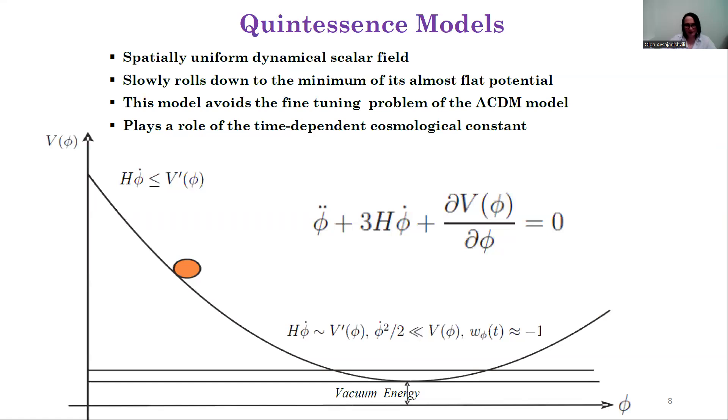Quintessence is a special uniform dynamical scalar field, slowly rolling down to the minimum of its almost flat potential. This model avoids the fine-tuning problem of the ΛCDM model and plays a role of the time-dependent cosmological constant at present.